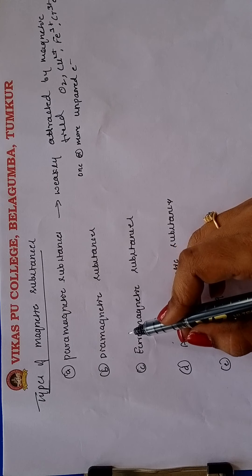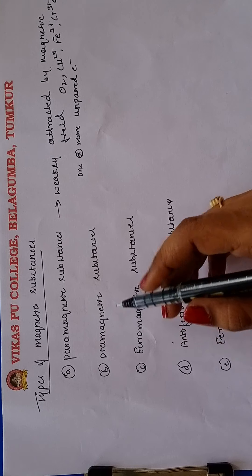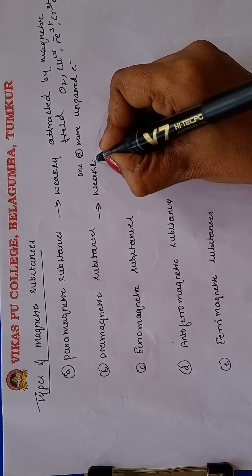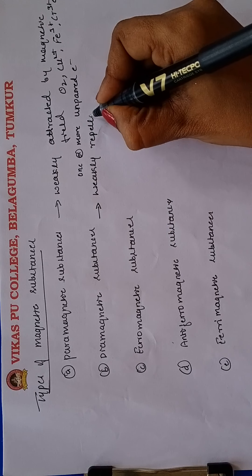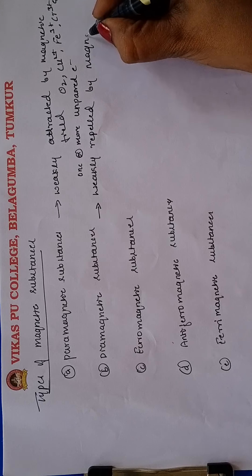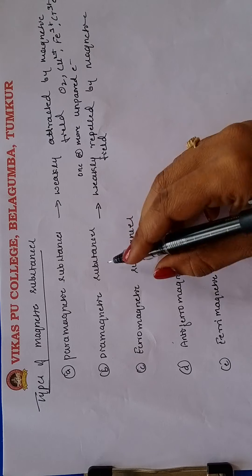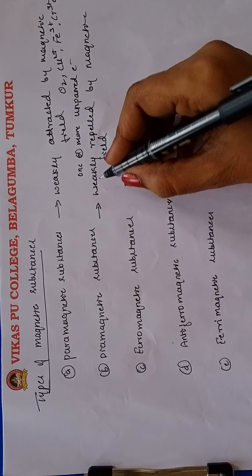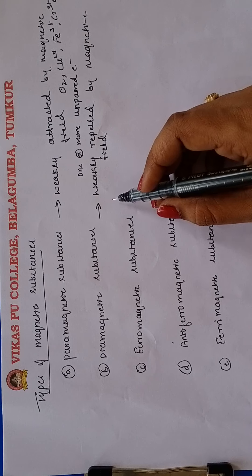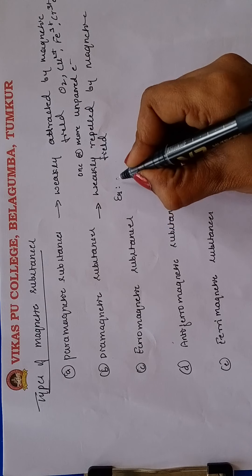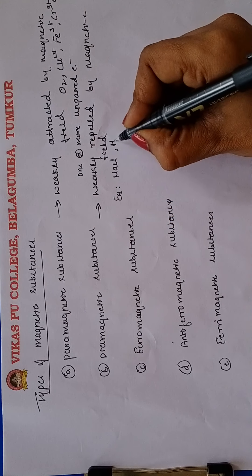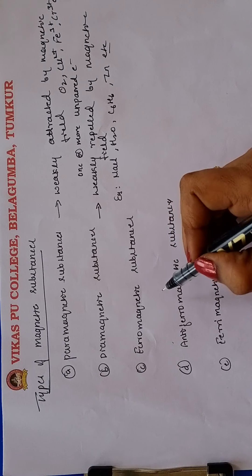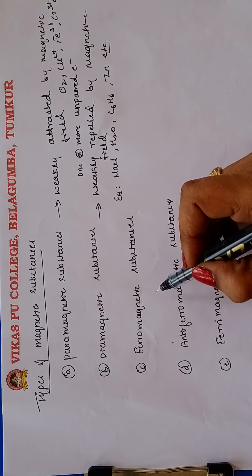Diamagnetic substances are those which are weakly repelled by the magnetic field. Diamagnetism is due to the absence of unpaired electrons. Examples include NaCl, H₂O, benzene (C₆H₆), and zinc, etc.